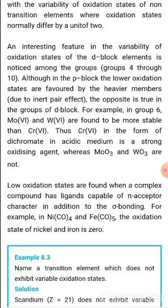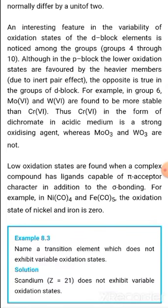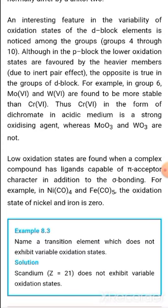There is an interesting contrast between the d-block and p-block regarding oxidation states. In the p-block, lower oxidation states are favored by heavier members due to the inert pair effect. But the opposite is true in d-block elements — heavier members tend to be more stable in higher oxidation states. For example, in group 6, molybdenum and tungsten are found to be more stable in the +6 oxidation state than chromium.